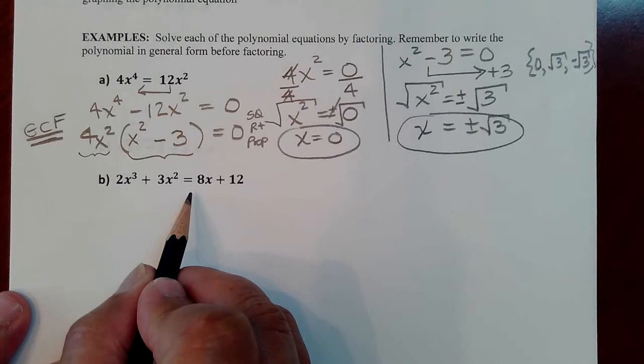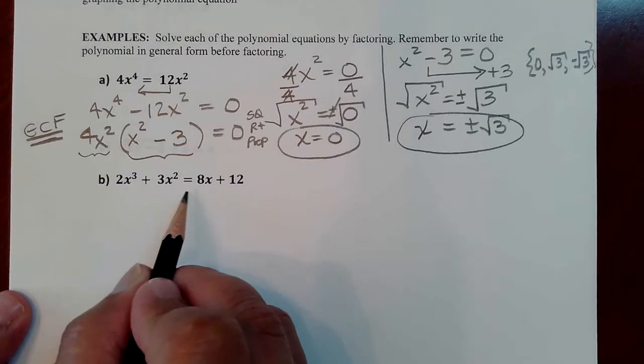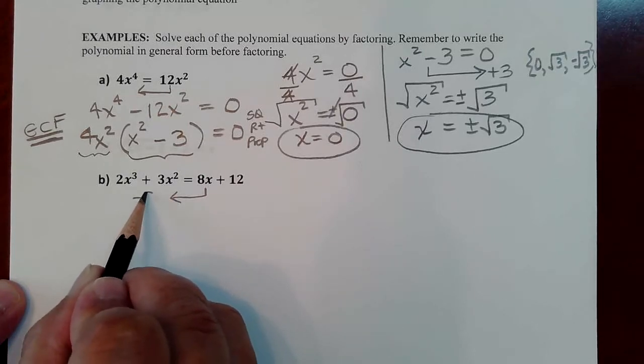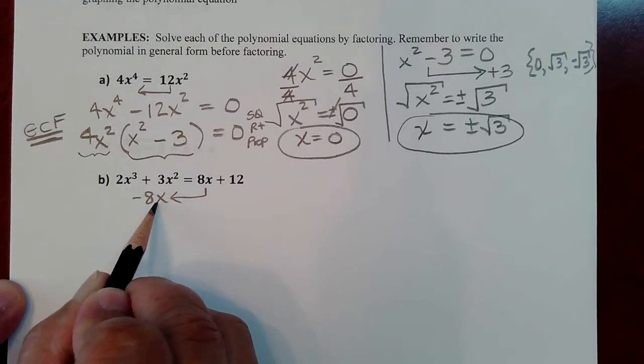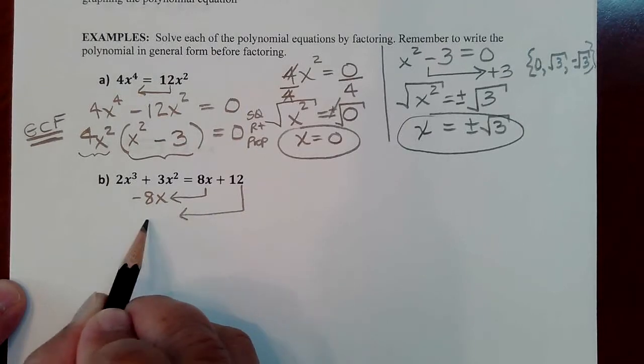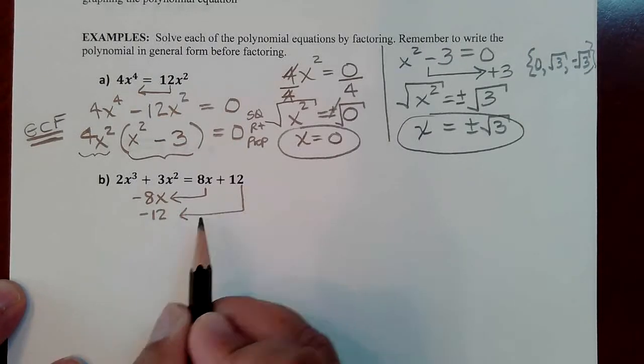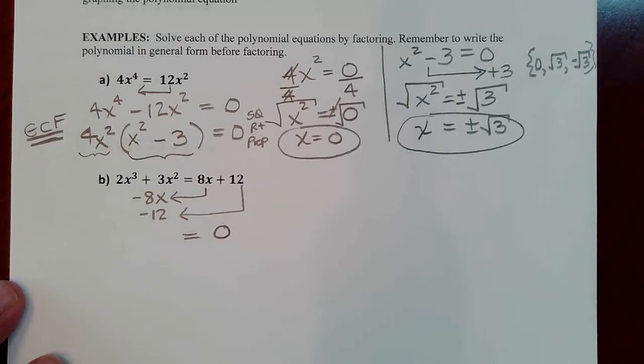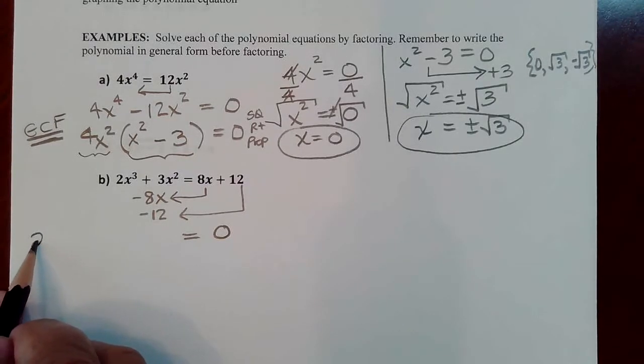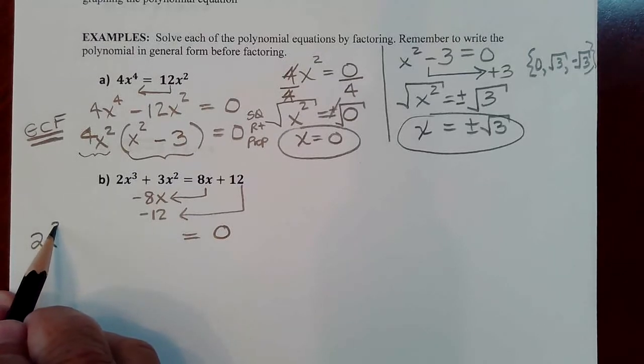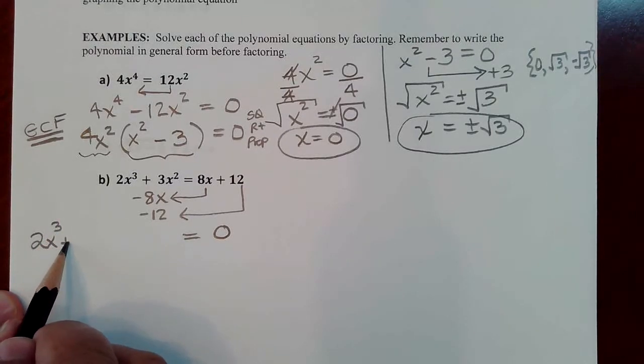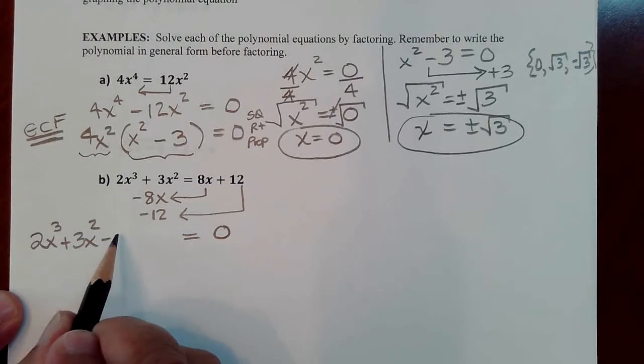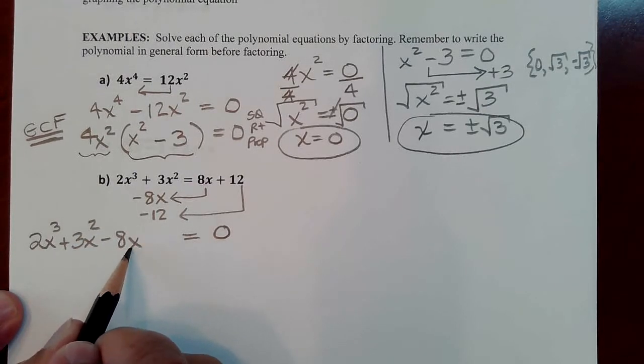So first, again, any factoring method, you're going to bring everything on one side. So we'll bring the 8x over here. It'll become negative 8x. We'll bring the 12 over here as well. And it'll become negative 12. So we've zeroed out one side just like we always need to when we're factoring. And the terms that we have are 2x^3 + 3x^2 - 8x - 12. Everything on the left-hand side. Now we're going to start grouping.